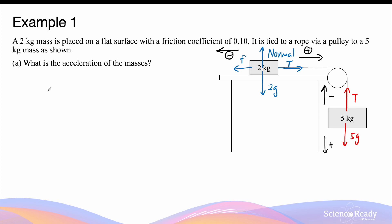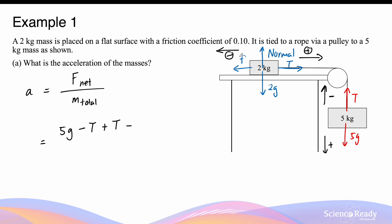Now I want to show a different approach that's simpler in terms of the algebra. The 2kg mass and the 5kg mass can be treated as a single mass since they are accelerating together. So we calculate the acceleration by taking the total net force acting on the two masses and dividing by the combined mass of 2kg plus 5kg. The net forces include 5g (weight of 5kg mass) minus tension, plus tension acting on the 2kg mass, minus friction — all divided by 7kg. The two tension forces cancel each other out.